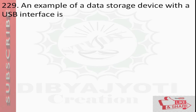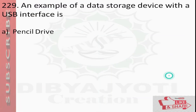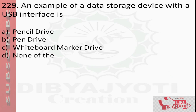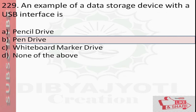Question number 229: An example of a data storage device with a USB interface is — option A pencil drive, option B pen drive, option C whiteboard marker drive, option D none of the above. Answer is option B pen drive.